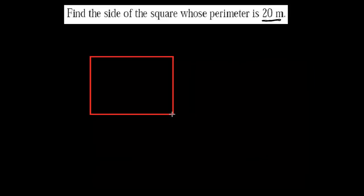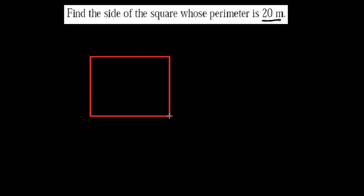Suppose this is my square, and the perimeter of this square is 20 meters. We need to find out the sides. Let me name the vertices: this is A, B, C, and D.